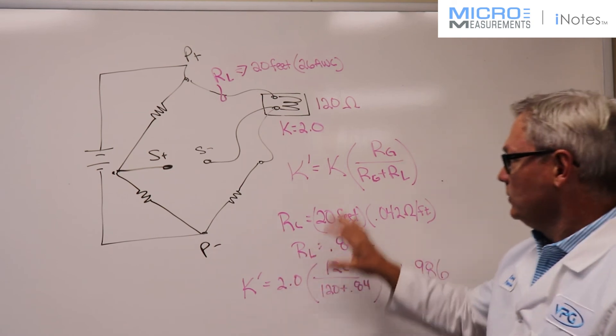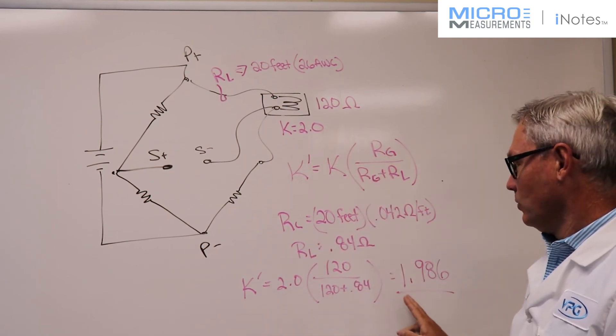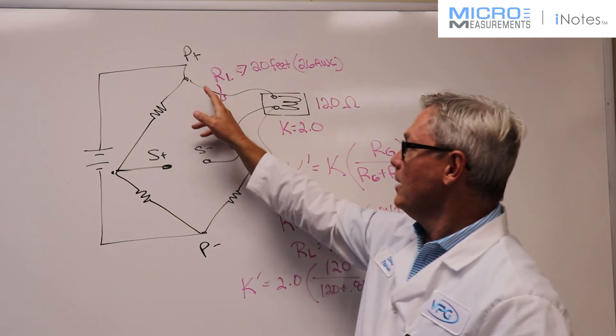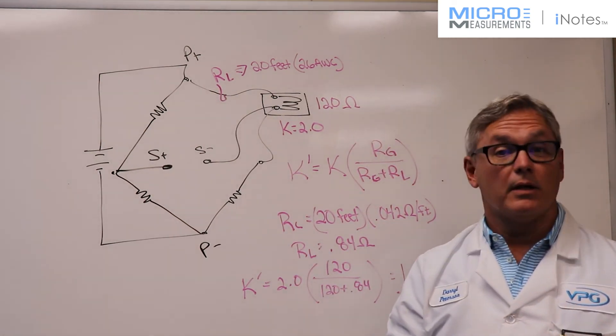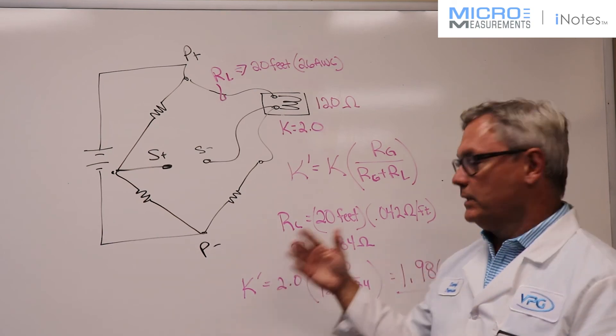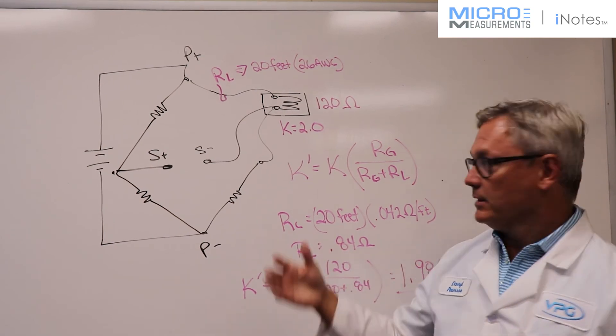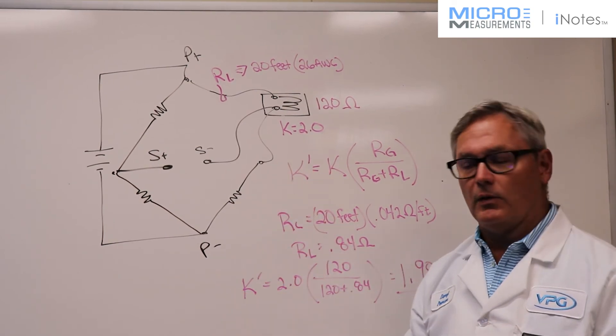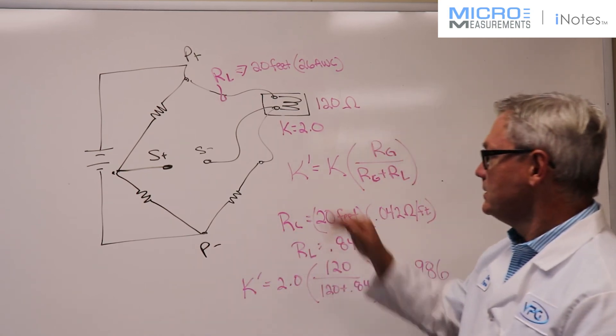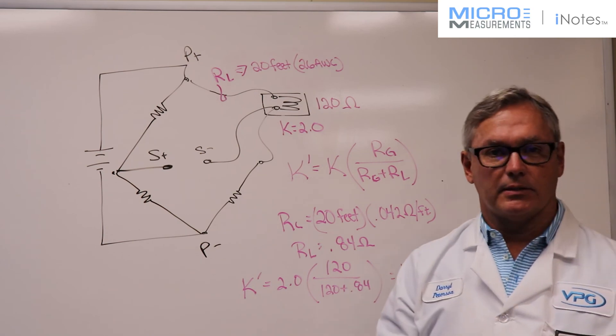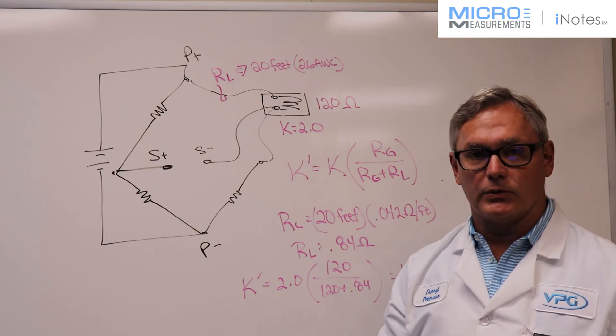So if you're going to use this equation to calculate an effective gauge factor to compensate for that wire resistance, you've got to make sure you're not doing a double correction. So this would be if your system doesn't support shunt calibration, or maybe you've got to do these calculations by hand for whatever reason. This is the way you would do that based on a three wire quarter bridge circuit.